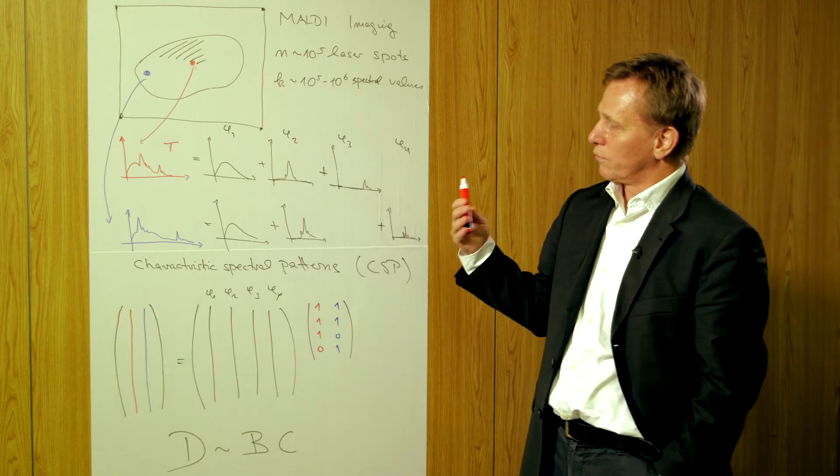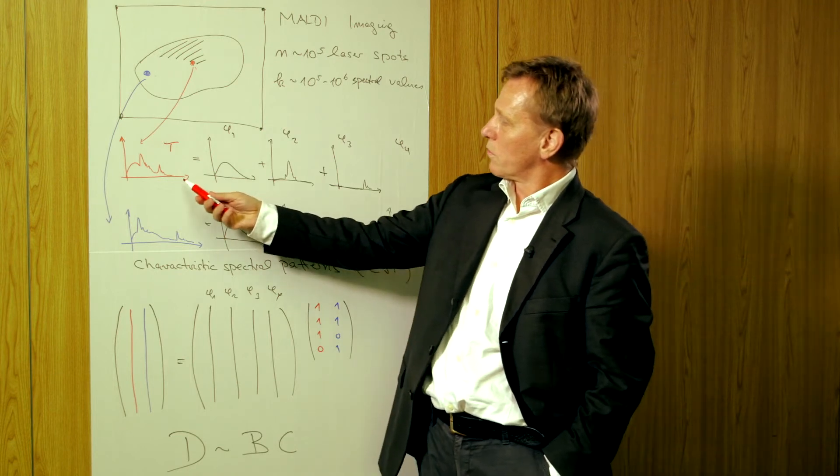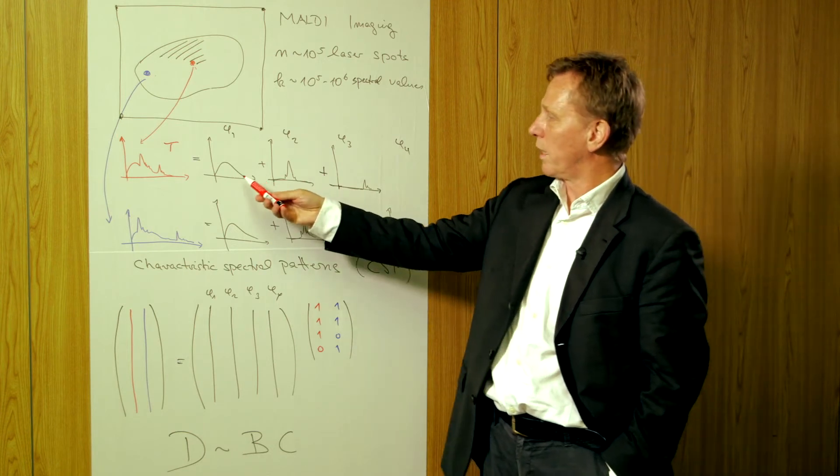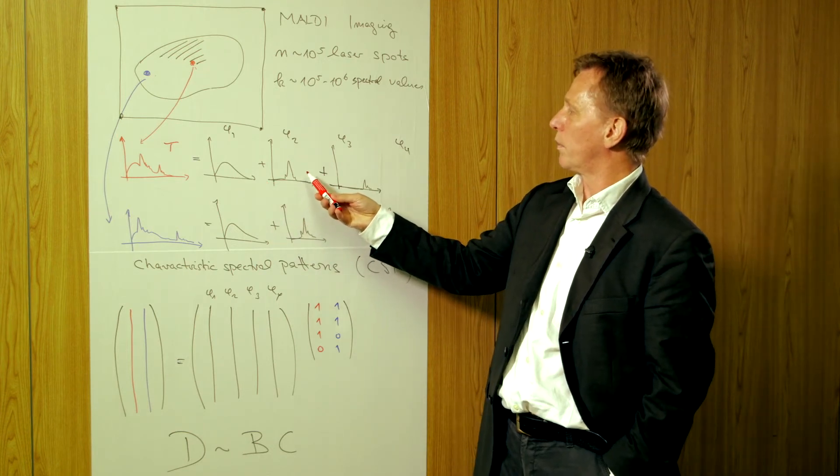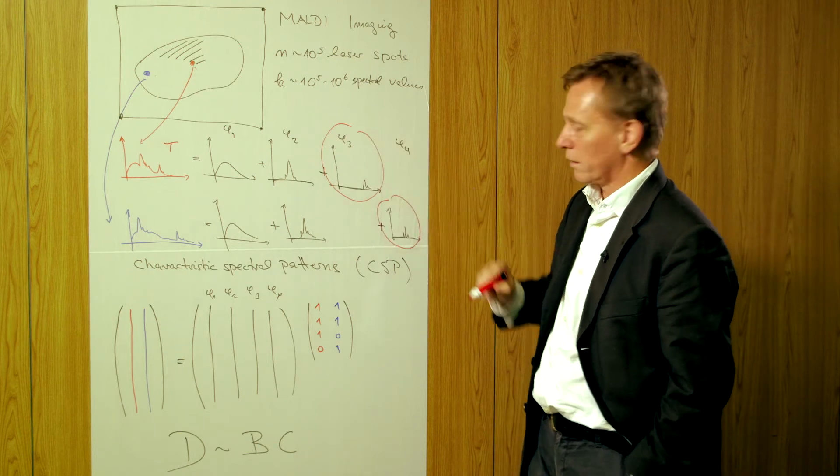The idea to formalize this and make math available is to assume that those spectra are superimposed from basic spectra, which represent baseline, matrix peaks coming from the preparation, and characteristic spectra discriminating healthy and cancerous tissue.